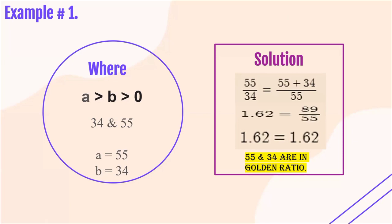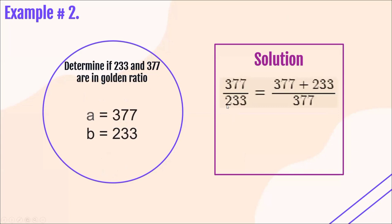Let's proceed to example number 2. Determine if 233 and 377 are in Golden Ratio. Our A is 377 and our B is equal to 233, because A is always greater than B. So A is 377 and B is 233.